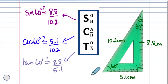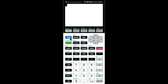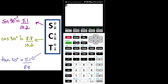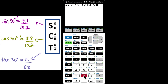Let's use the calculator to verify. I'll try to find the angle again using the ratios. Second function sine, and the ratio is 5.1 divided by 10.2. I should get 30 degrees, and I do.